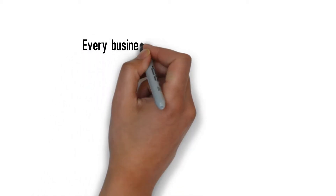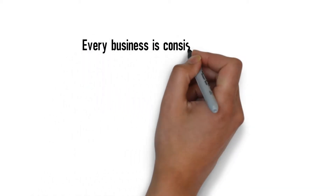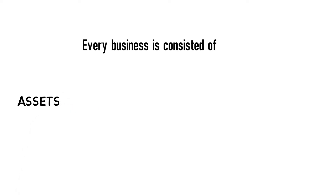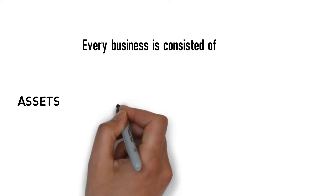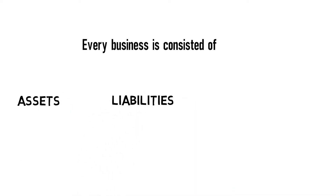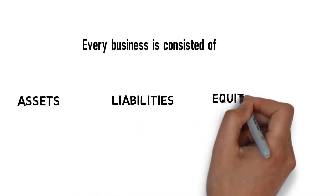Every business consists of three things: assets, liabilities, and equity, or we can call it capital.